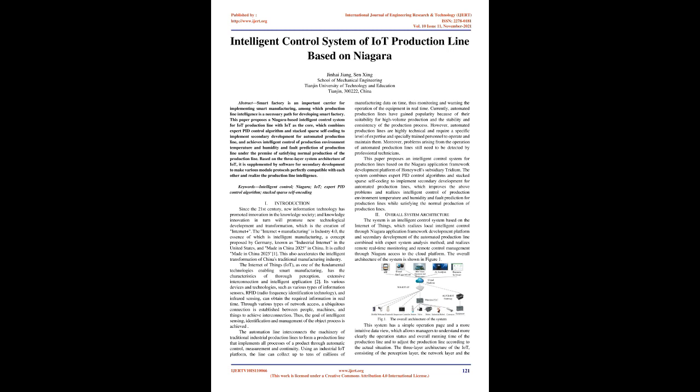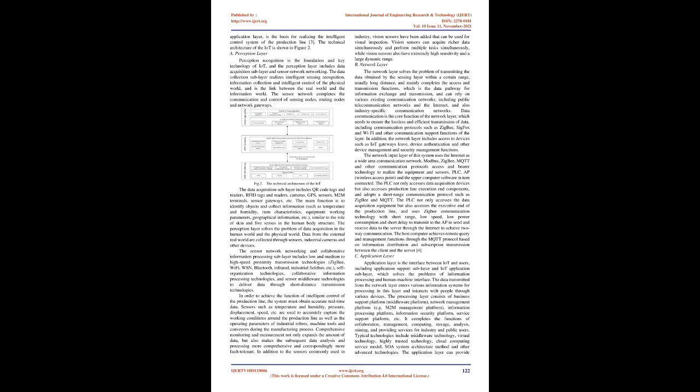This paper proposes an intelligent control system for production lines based on the Niagara Application Framework Development Platform of Honeywell's subsidiary Tridium. The system combines expert PID control algorithms and stack sparse self-coding to implement secondary development for automated production lines, which improves the above problems and realizes intelligent control of production environment temperature and humidity and fault prediction for production lines while satisfying normal production. The system is an intelligent control system based on the Internet of Things, which realizes local intelligent control through the Niagara Application Framework Development Platform and secondary development of the automated production line combined with expert system analysis method, and realizes remote real-time monitoring and remote control management through Niagara access to the cloud platform. The three-layer architecture of the IoT, consisting of the perception layer, the network layer, and the application layer, is the basis for realizing the intelligent control system of the production line.